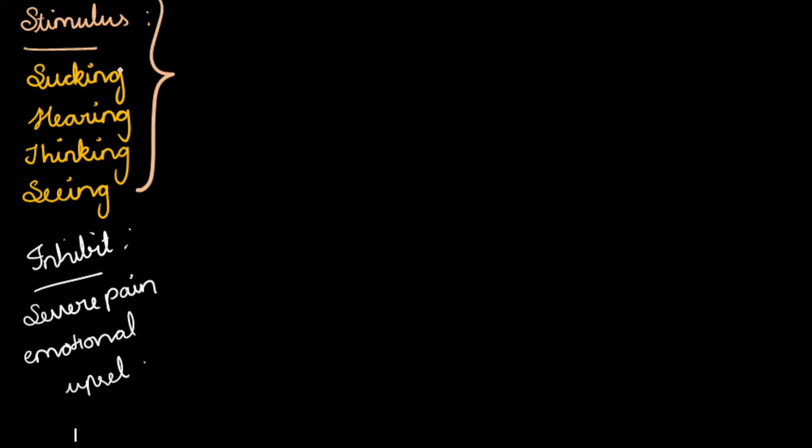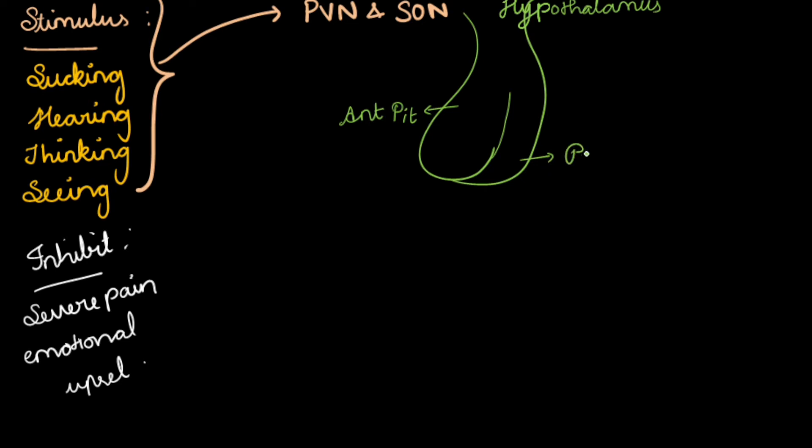Because of any type of stimulus mentioned here, this directly goes and stimulates two different nuclei in the hypothalamus, that is paraventricular nuclei and supraoptic nuclei. This is our hypothalamus and this is our anterior pituitary and this is our posterior pituitary. It will directly stimulate the paraventricular nuclei and supraoptic nuclei in the hypothalamus.